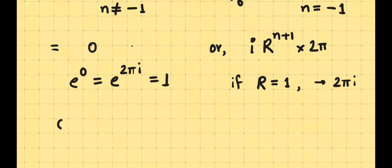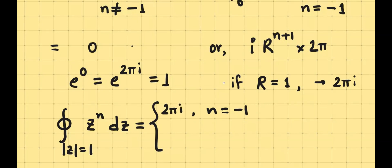So we can conclude that the closed loop integral, where the loop is the unit circle, of z to the power n dz, has two answers. So when n is equal to negative 1, then the answer is 2πi, and when the answer is anything, any other integer other than negative 1, we have the answer 0. So this is a fantastic result.